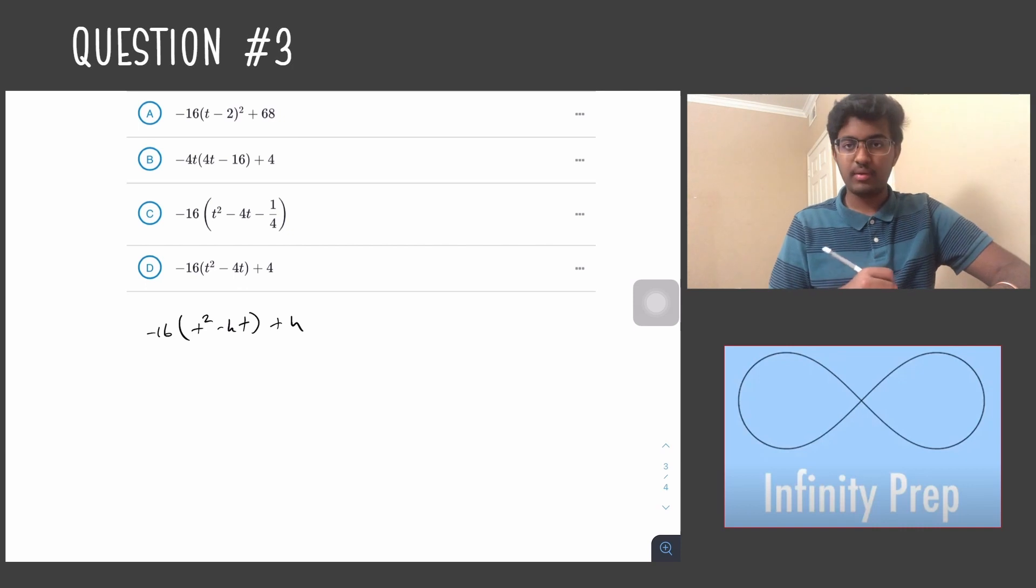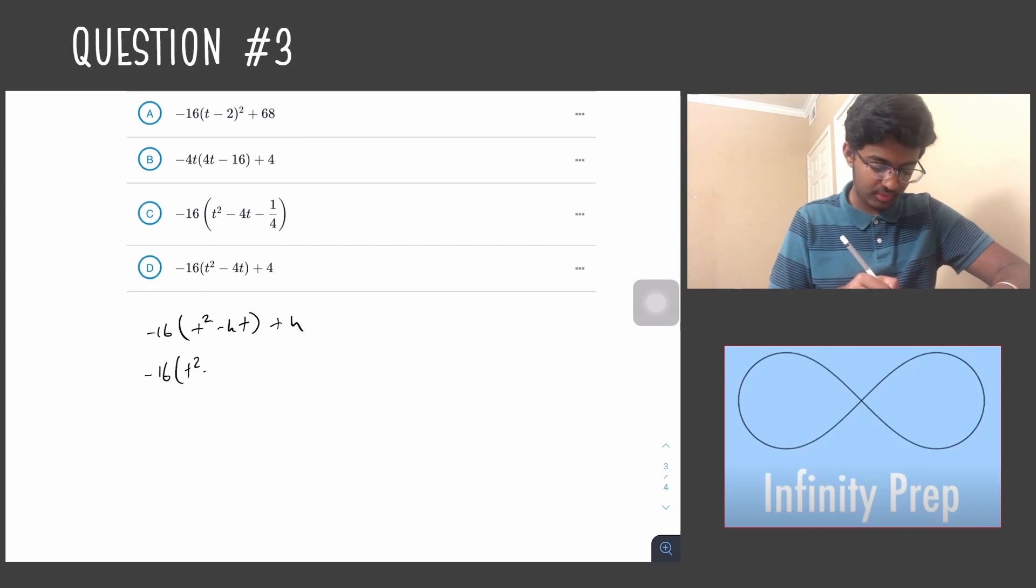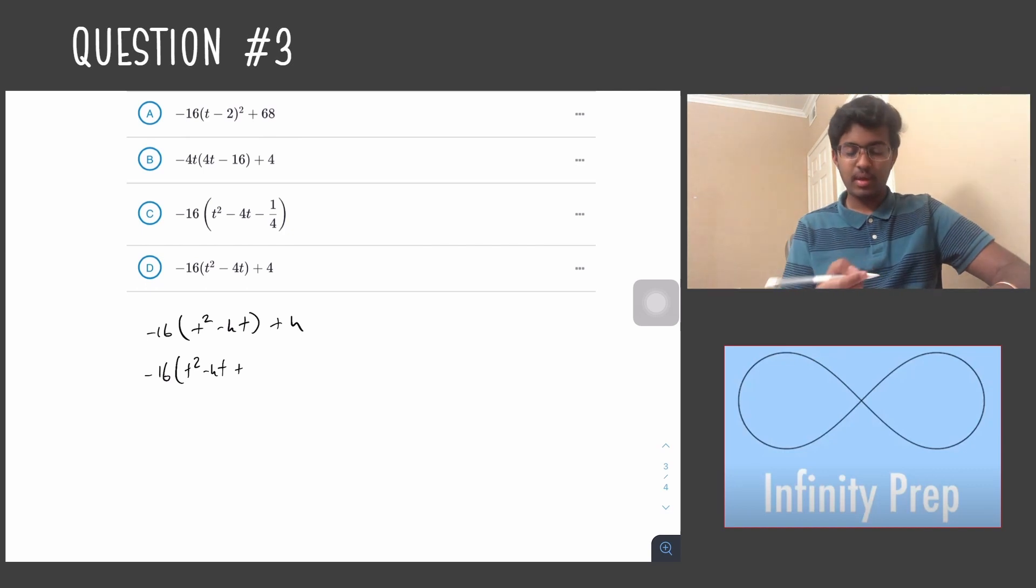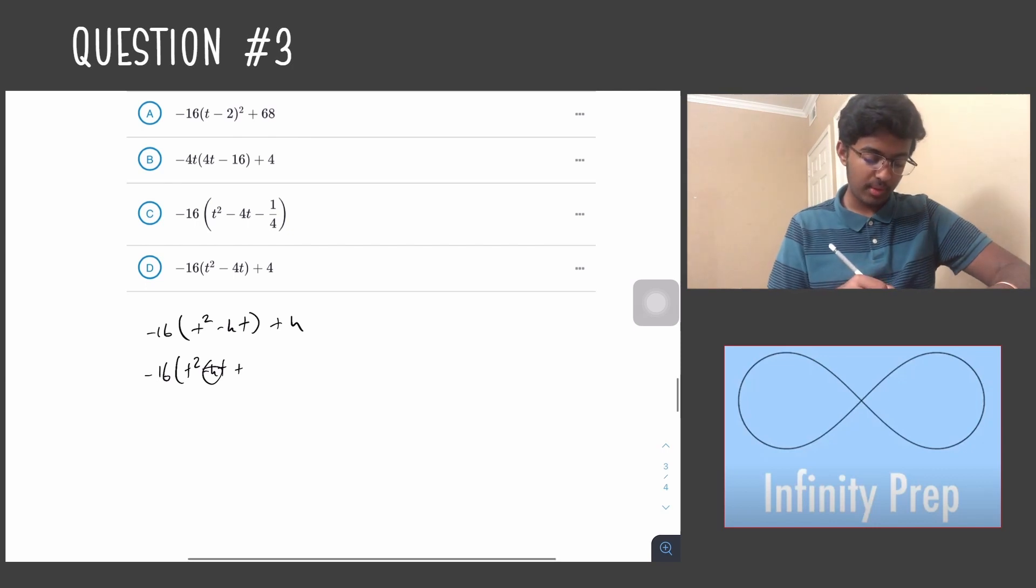Now that we've factored out the -16, we can use completing the square. To do that we need to divide the b term right here by 2 and square it. When we do that we get -4 divided by 2, which is -2, squared is 4.